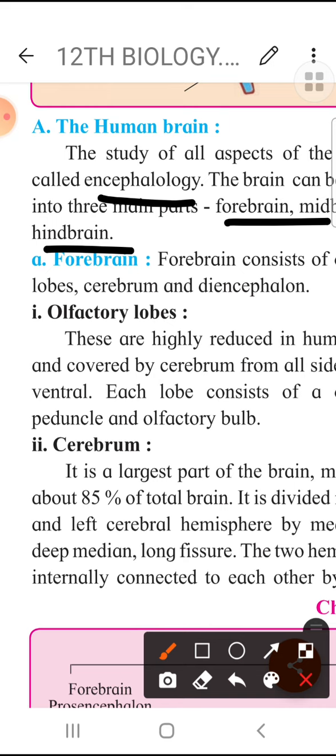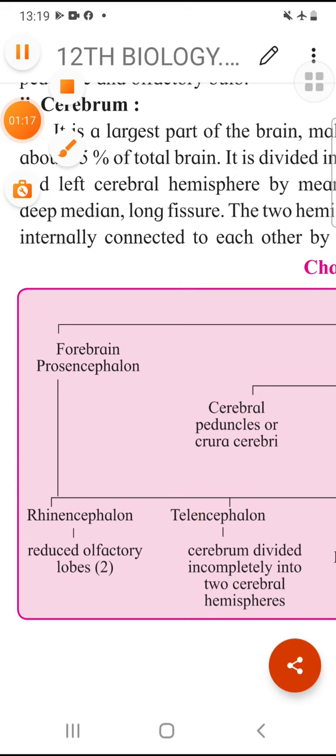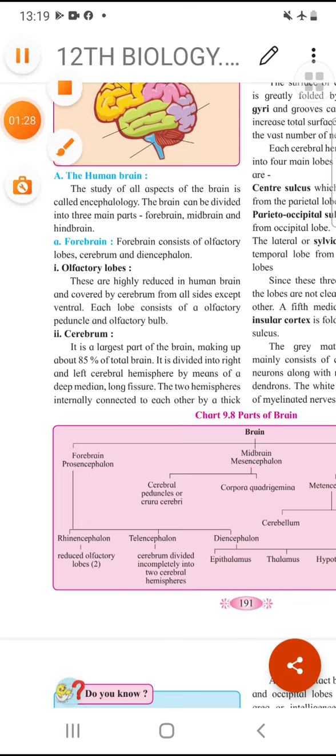The forebrain is again divided into major parts - the olfactory and cerebrum. Olfactory is related with olfaction. You should not forget olfaction means smell. So when you see your forebrain, forebrain is divided functionally. You can go through this ray diagram. Olfactory lobe is shown here, then you have the cerebrum and then you have this diencephalon.